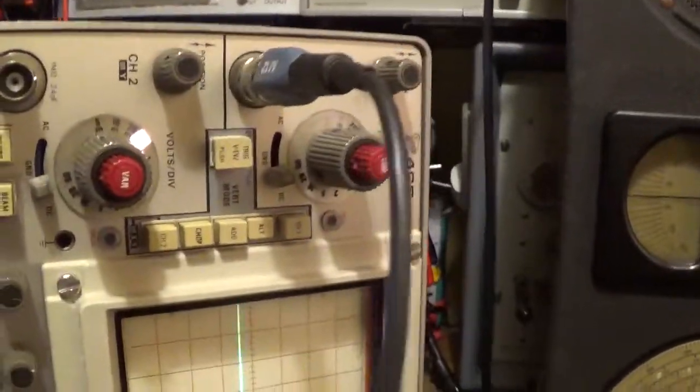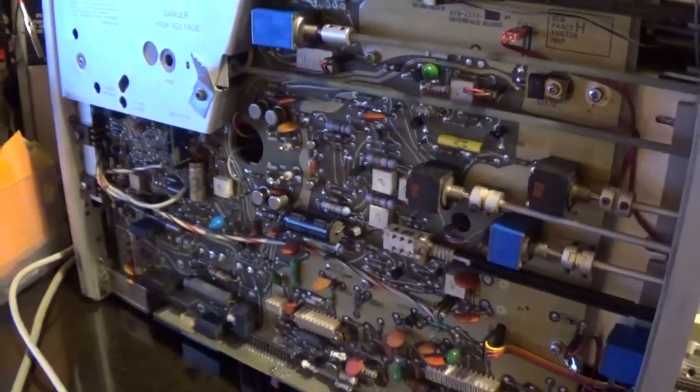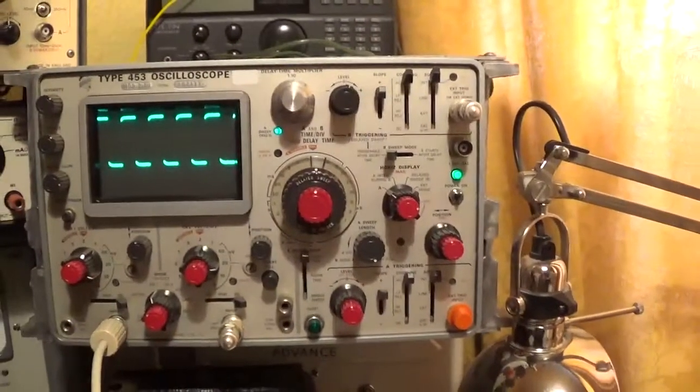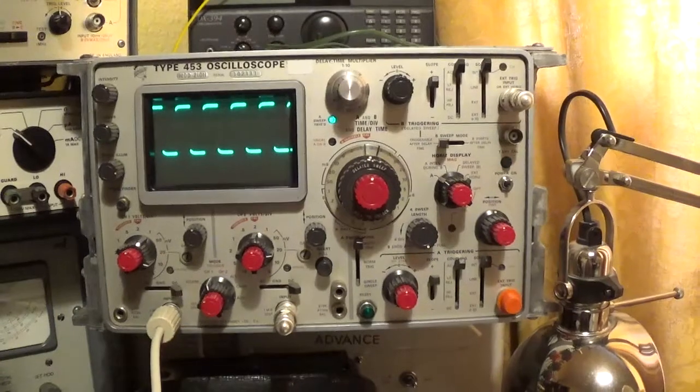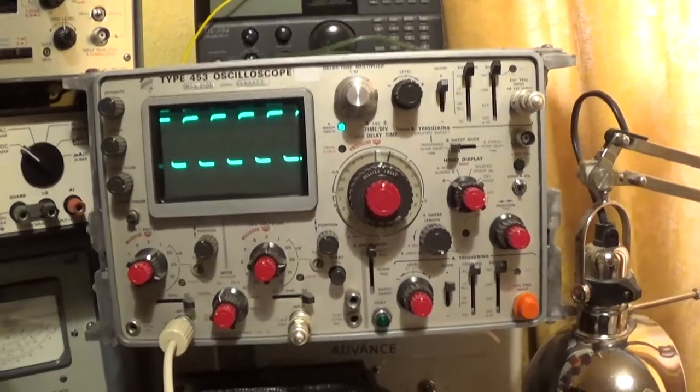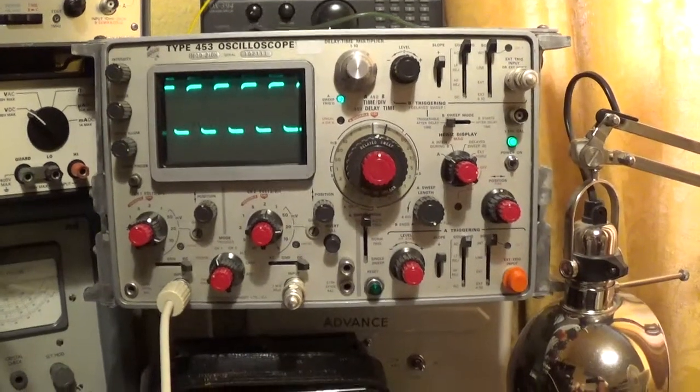So what I've done next is connected the vertical out on the rear panel up to my Tek 453, and there you can see it is actually showing the calibrator signal. And if I turn the volts per division knob on the 465 on channel A, you can see.